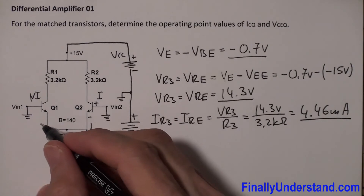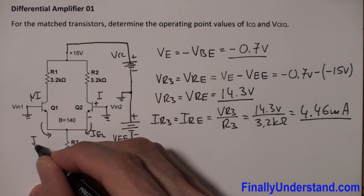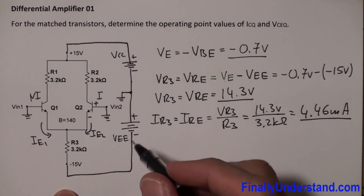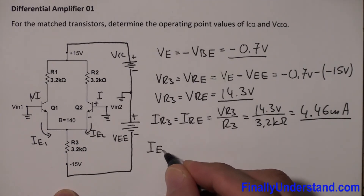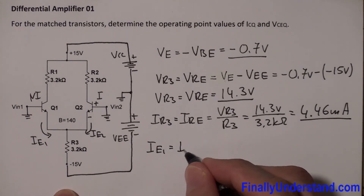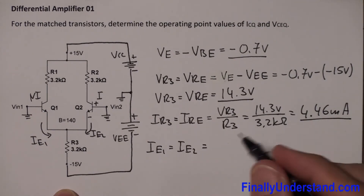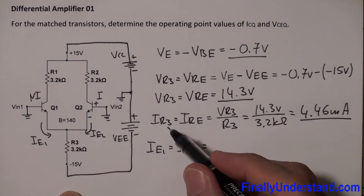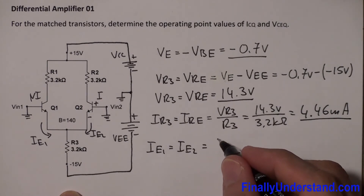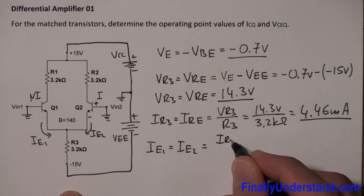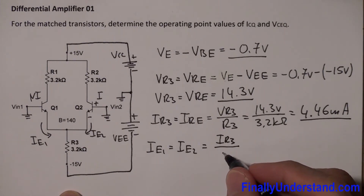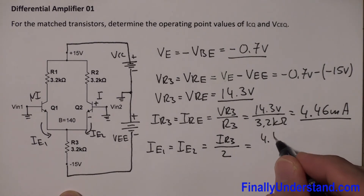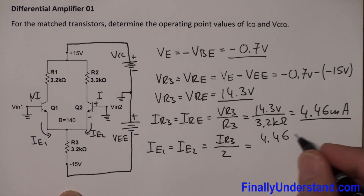Next, we find currents IE1 and IE2. Remember that IE1 equals IE2, and each is half of the tail current. The tail current is IR3, so IE1 = IE2 = IR3 ÷ 2 = 4.46 mA ÷ 2 = 2.23 milliamps. This is the current through each emitter.